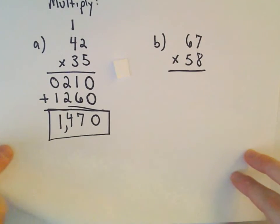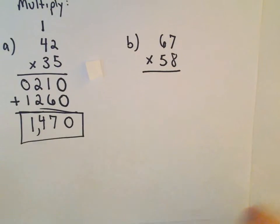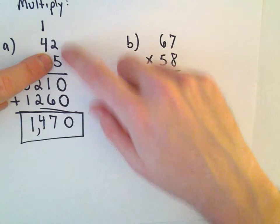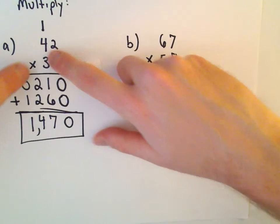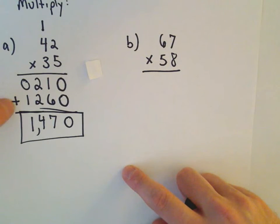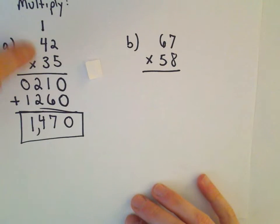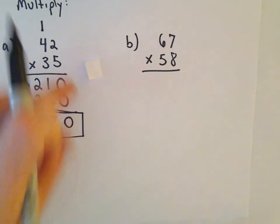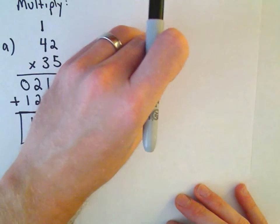So let's do one more here. And if you think about it, that's really what you're doing. You're doing 5 times 42. And then you're doing 30 times 42. And then we're just adding those together. That's all we're doing. We're kind of breaking a multiplication problem into sort of just two addition problems. That's really all this process does.